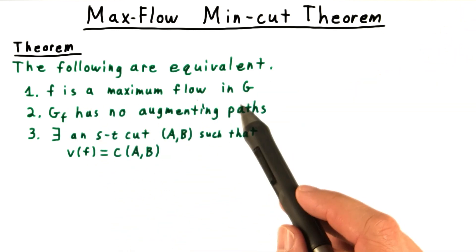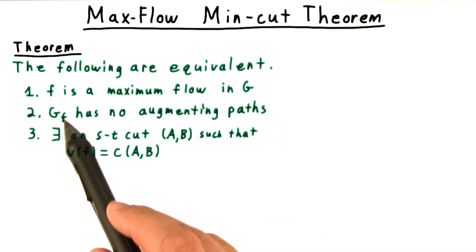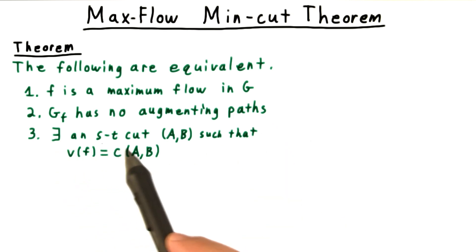F is a maximum flow in a flow network G. The residual graph GF has no augmenting paths. And there exists an ST cut AB such that the value of the flow is equal to the value of the cut.